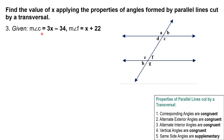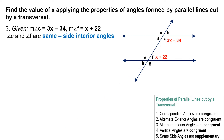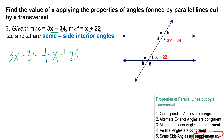Next example: angle C equals 3x minus 34 and angle F equals x plus 22. Looking at the figure, angle C and angle F are same-side interior angles, which are supplementary — not congruent. To solve, we add them and set the sum equal to 180: 3x minus 34 plus x plus 22 equals 180.